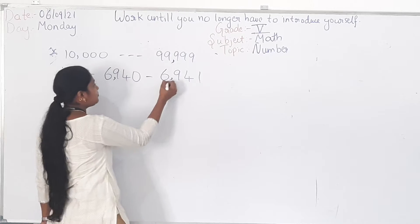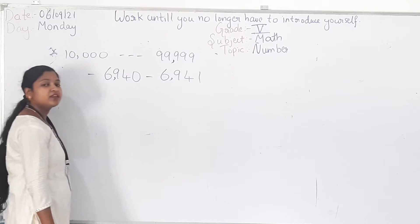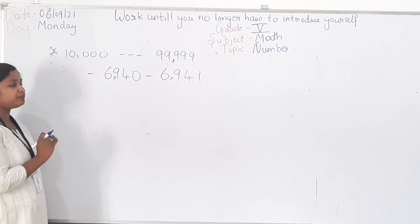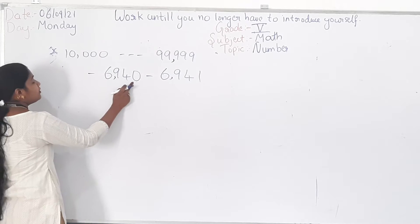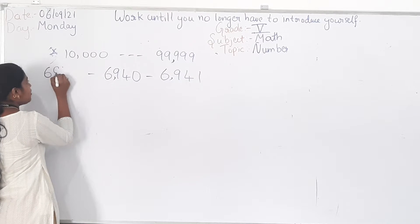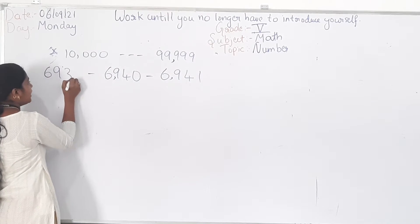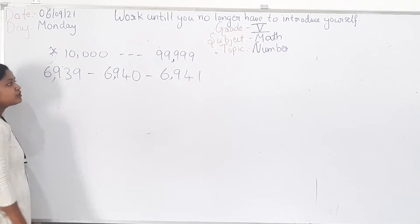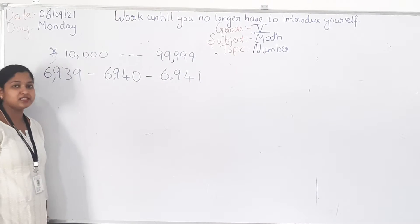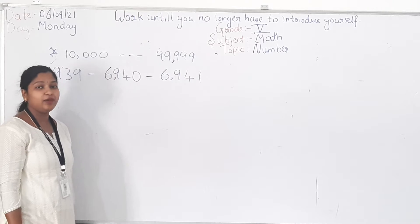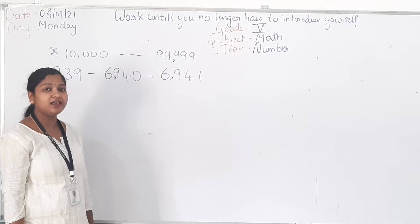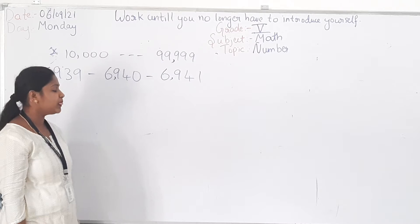How will you find the predecessor? Predecessor means decreasing the number by 1. If you subtract 1 from 6940, what is the number you will get? It is 6939. So the successor of 6940 is 6941 and the predecessor is 6939. Successor means adding 1 to the number; predecessor means subtracting the number by 1.